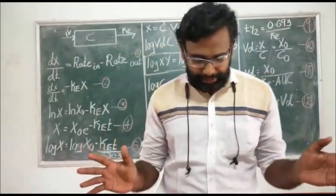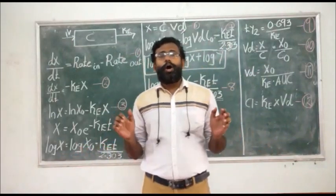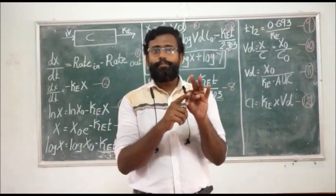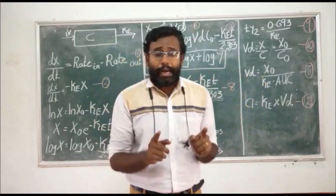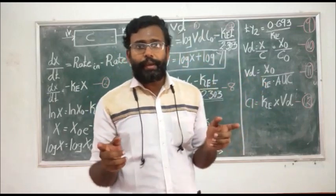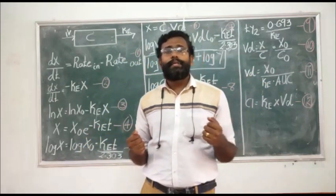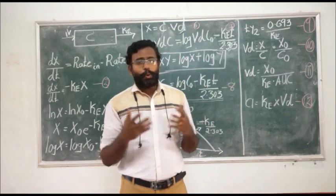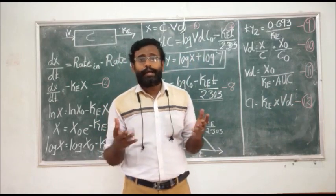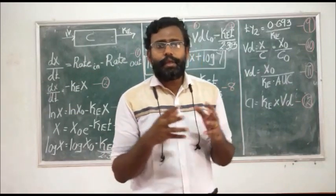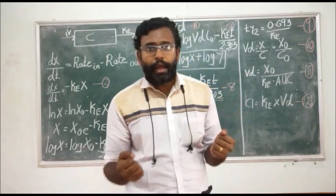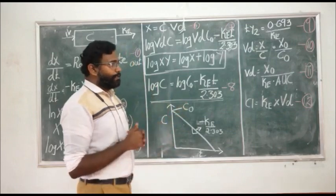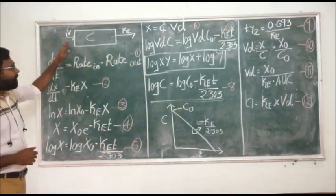Today we are going to discuss the topic of one-compartment open model with IV bolus administration. It is only one compartment, it is an open model, and the route of administration is IV. So if you administer a single dose injection into a healthy volunteer, how do you determine the various pharmacokinetic parameters? You have to collect blood samples and analyze them. If it follows a one-compartment model, we will see how to determine the parameters.